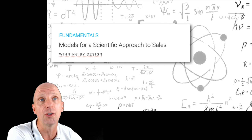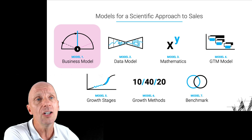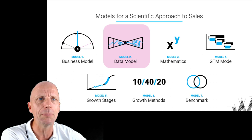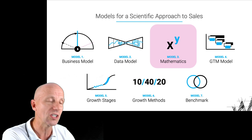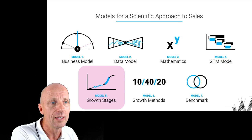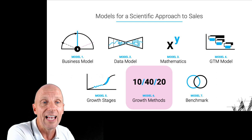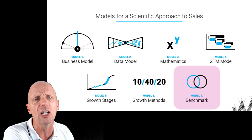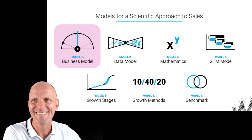Previously, I showed you the GoToMarket model, and today I'm going to share with you the business model. What you see here are the various models: today the business model, we have the data model — how we map the data and processes, and the mathematics behind it. We also spoke about the GoToMarket model, which you can find on our YouTube channel. Next, we're going to talk about growth stages, growth methods, and we'll end up at benchmarks.